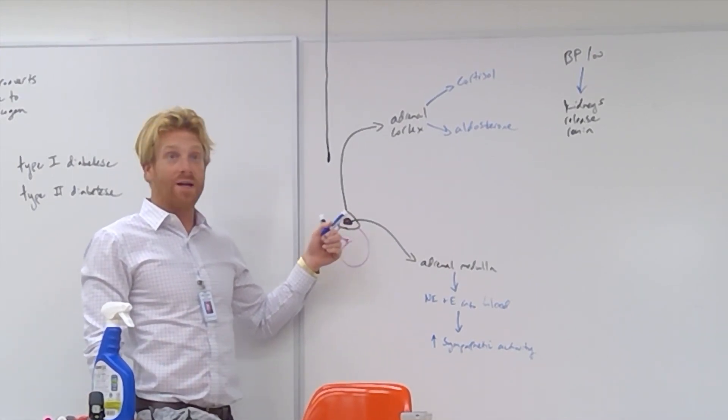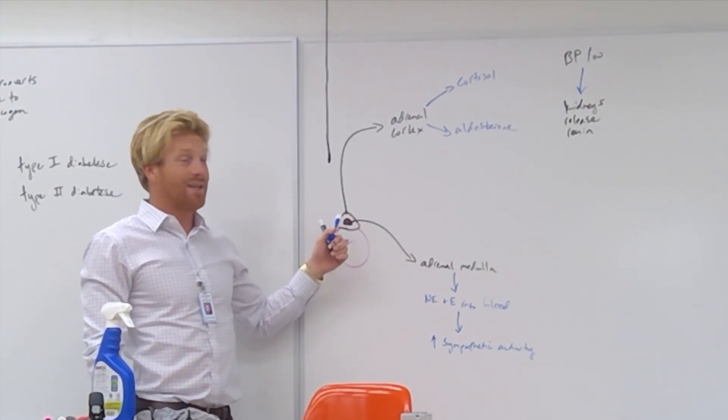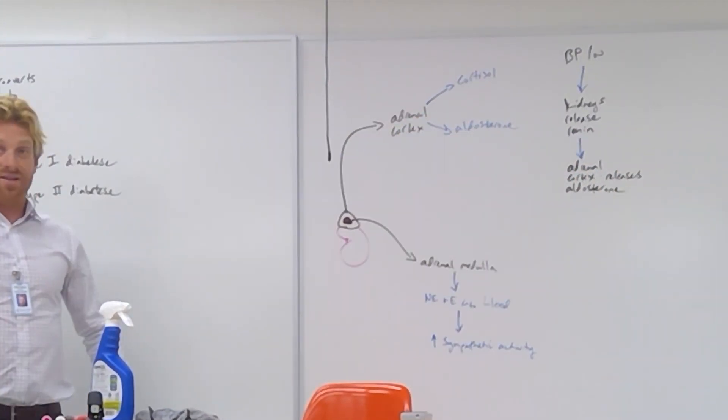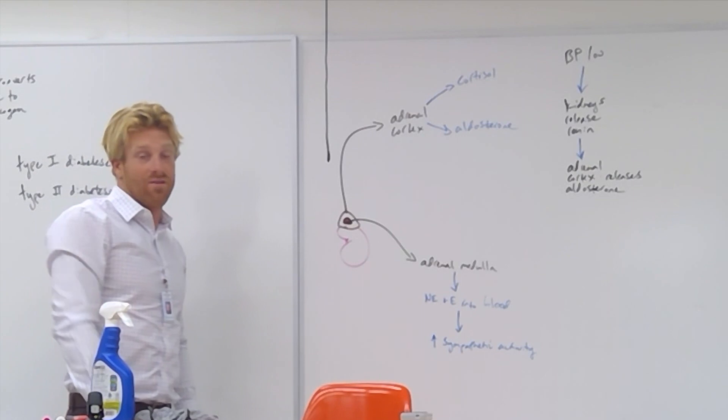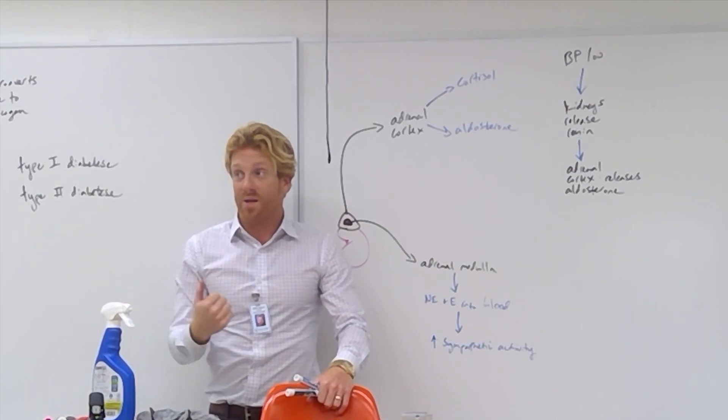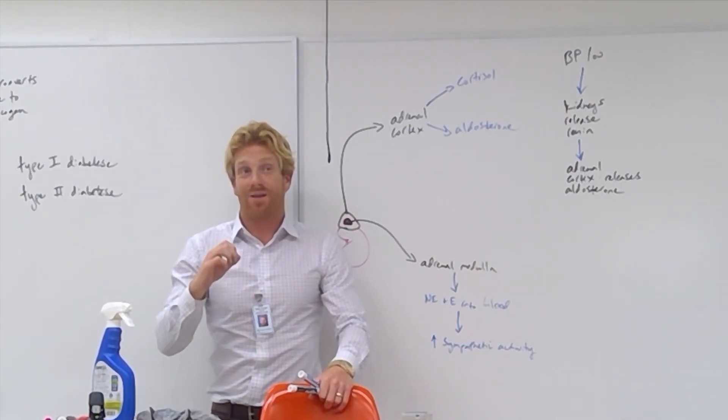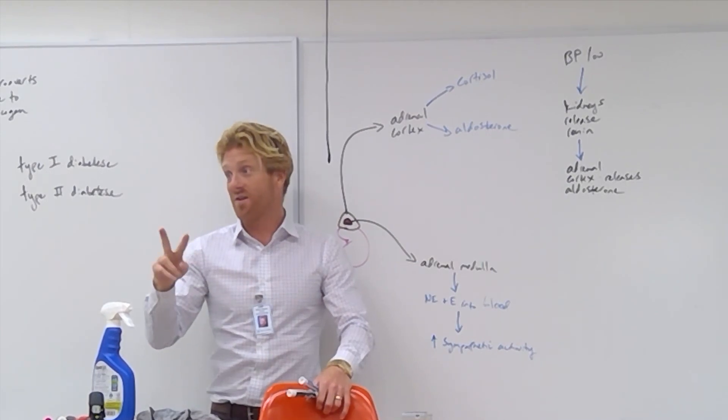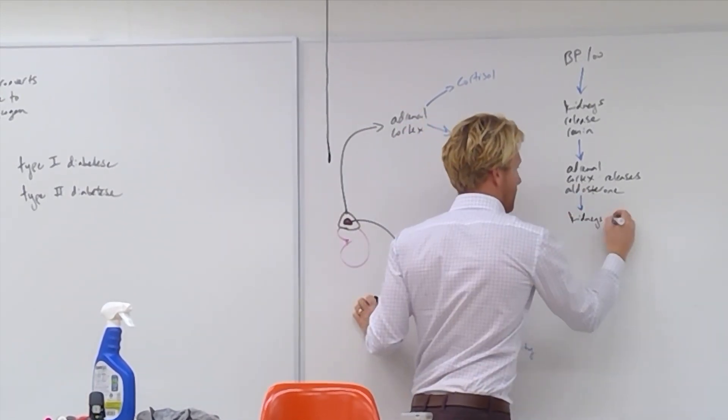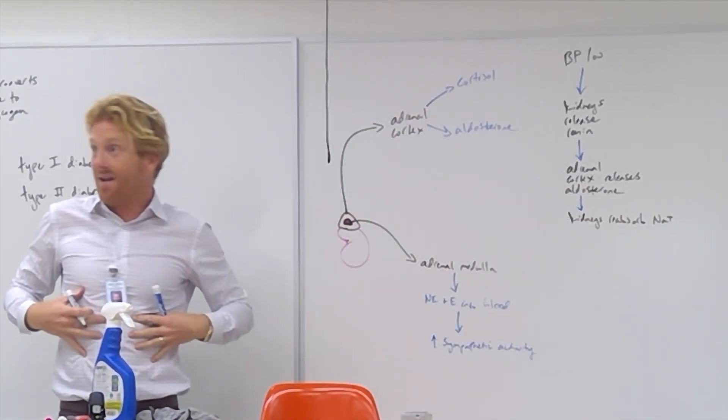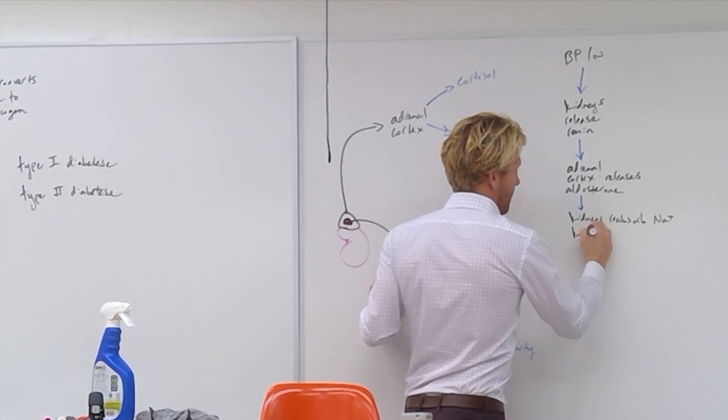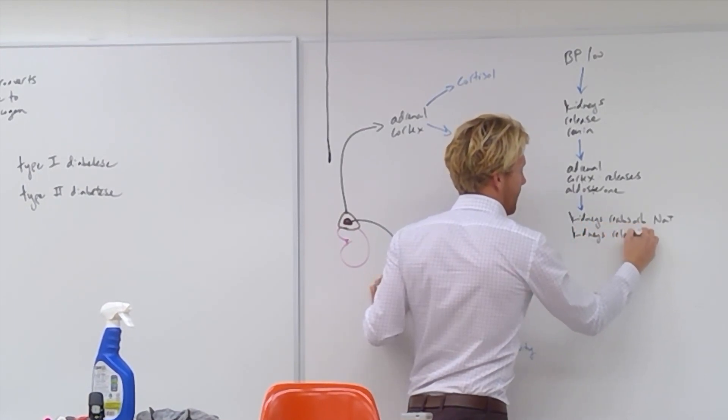He binds onto the adrenal cortex. So when the adrenal cortex binds onto renin, the adrenal cortex is going to release another hormone called aldosterone. Aldosterone does two major things. Aldosterone tells the kidneys to reabsorb sodium from the urine, and it tells the kidneys to secrete potassium. So they keep sodium in the body, they reabsorb it from the urine, and then the kidneys release potassium.